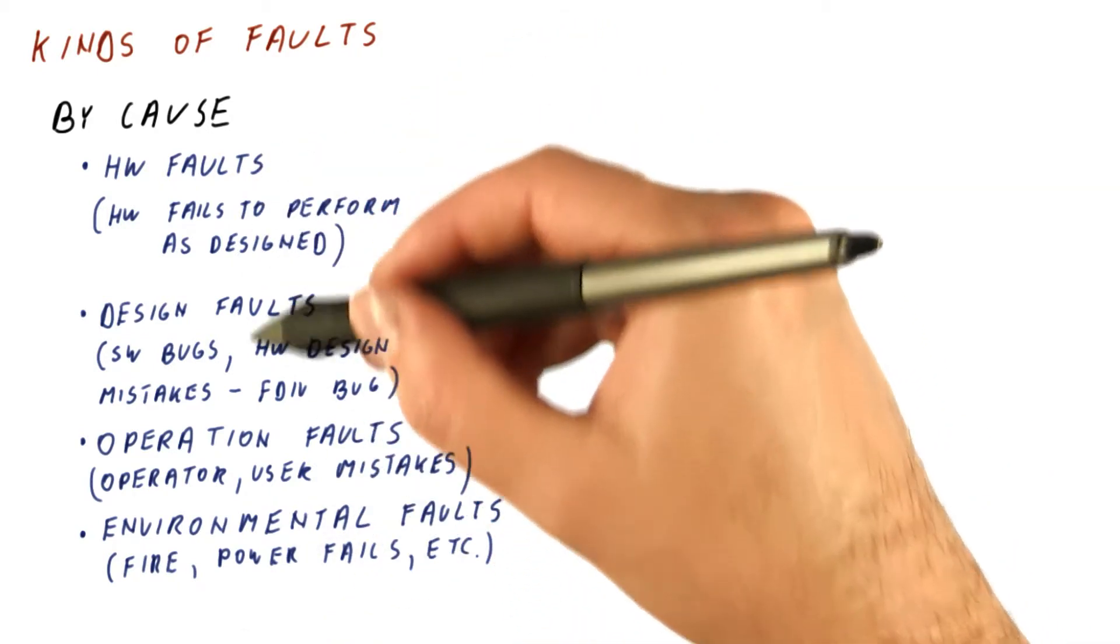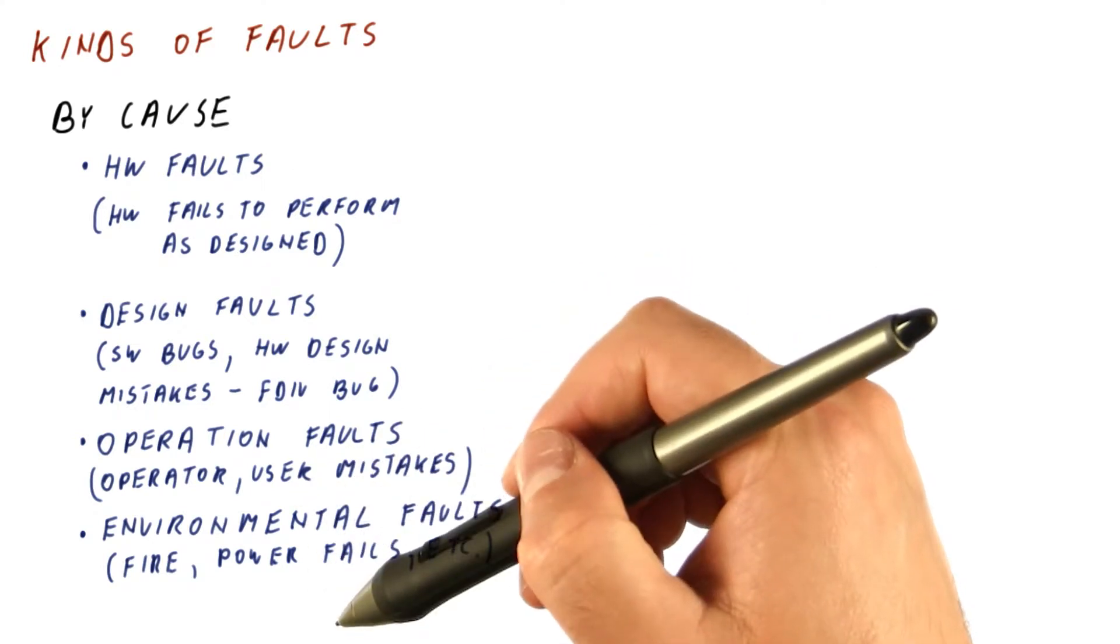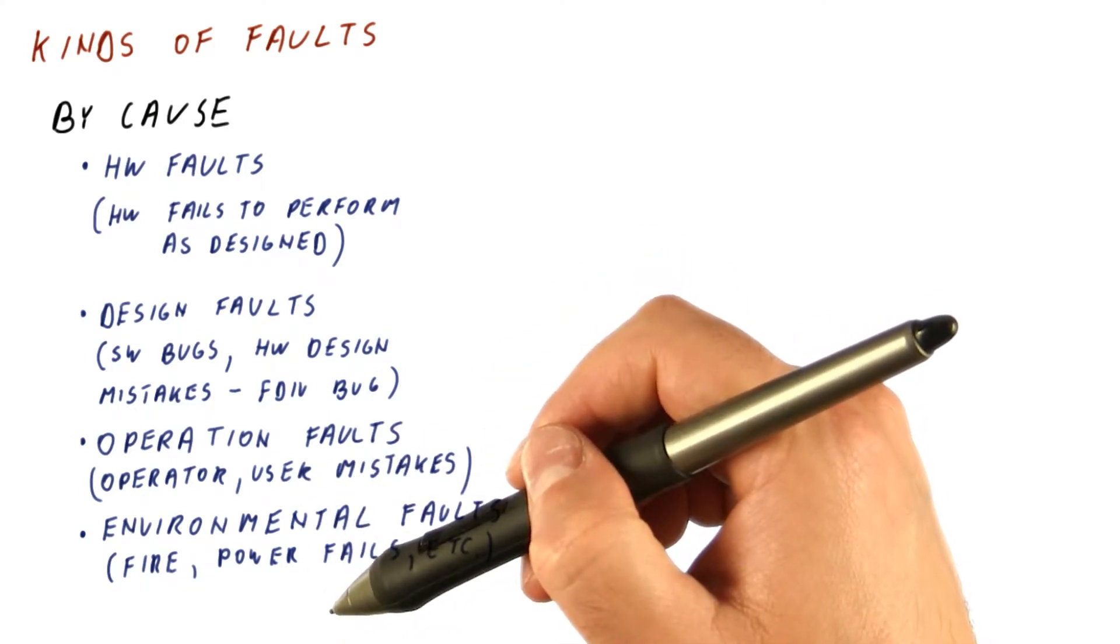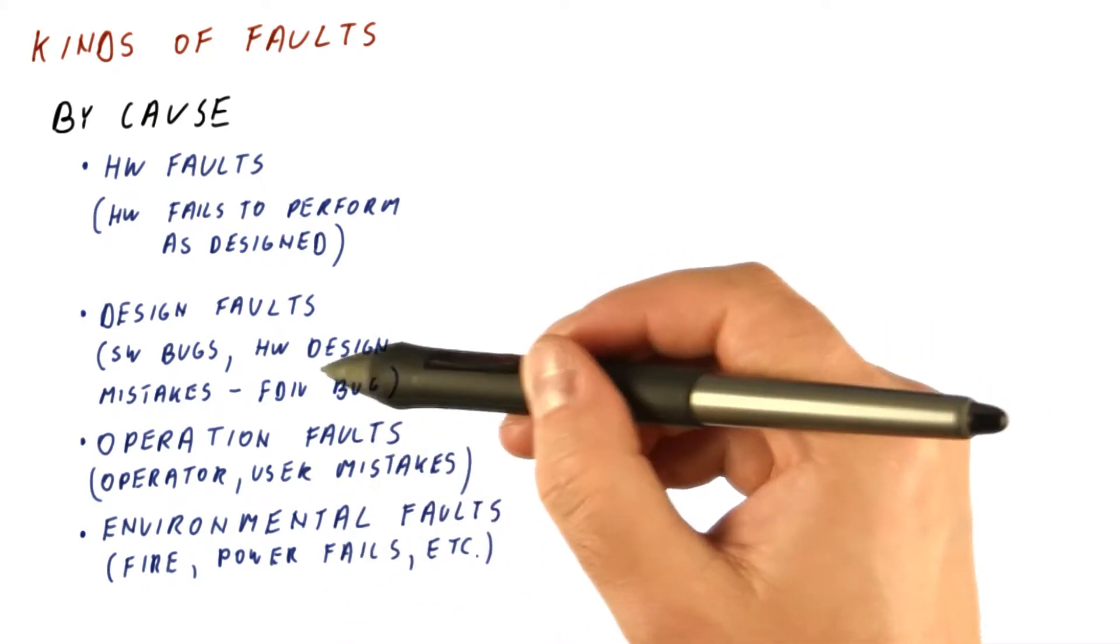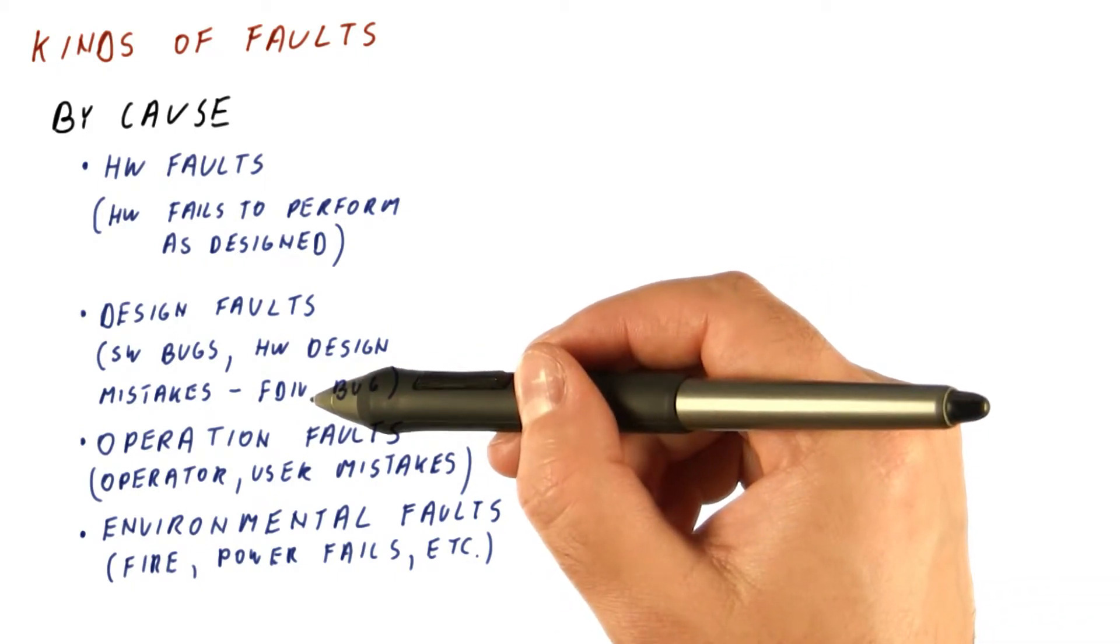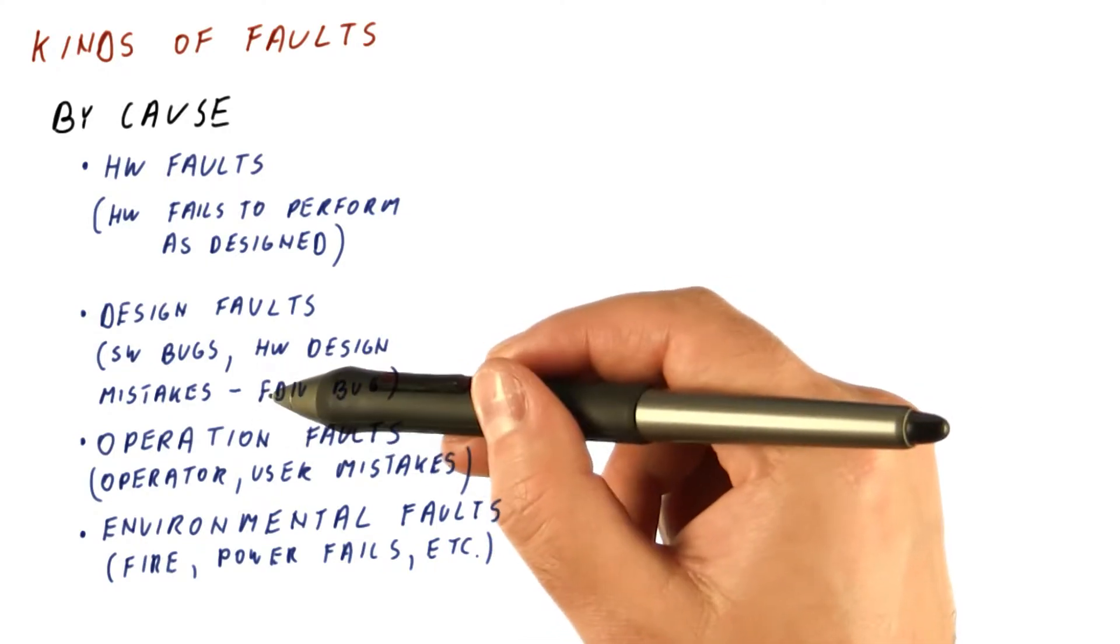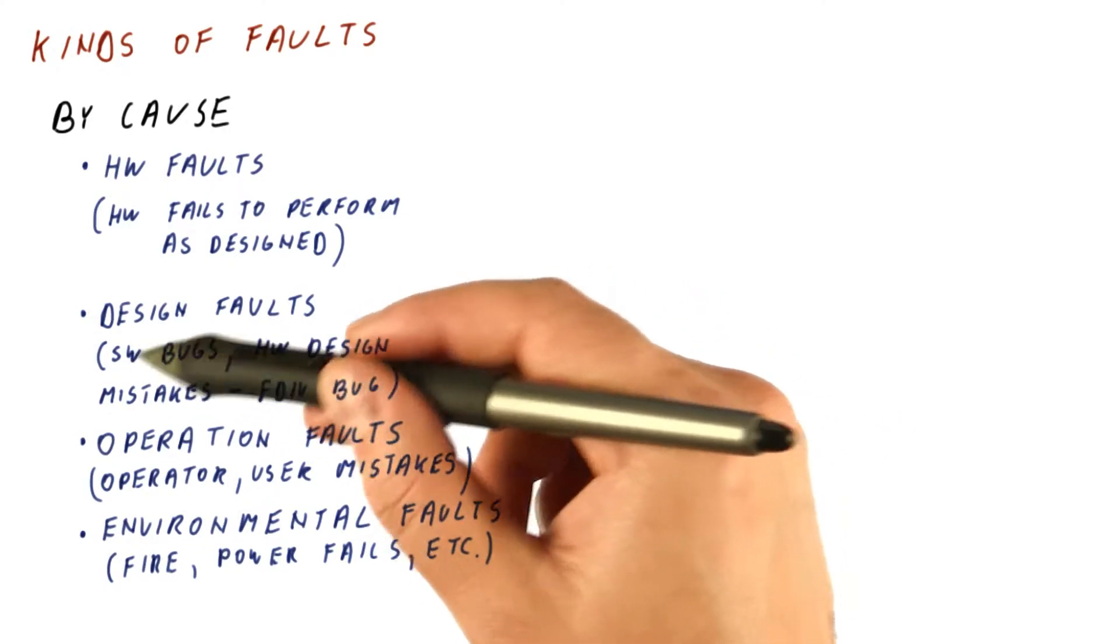Note that these are all faults. Some of them don't result in a failure. For example, the FDIV bug doesn't result in an error or a failure if you never really use the wrong combination of numbers for it. A software bug in a rarely used function may never result in an actual error.